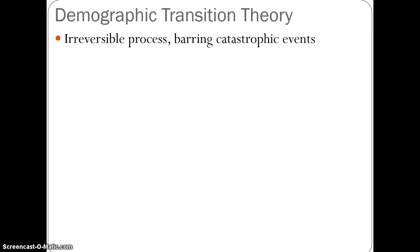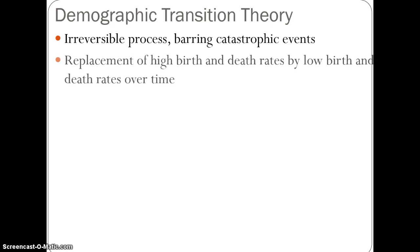However, with the addition of Stage 5, there is the possibility of moving back from Stage 5 to Stage 4, and it will probably end with a cyclical movement between Stages 4 and 5. Overall, the DTM was created to explain the transition in demographics over time — most countries starting with high birth and death rates, with some countries moving forward and being replaced by low birth and low death rates over time.